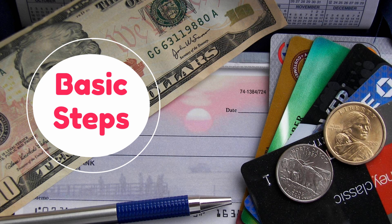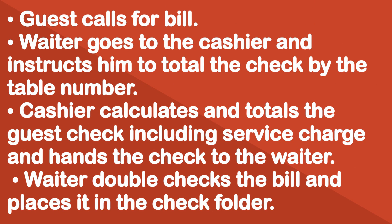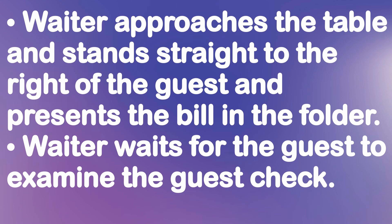Now we will discuss some basic steps which are followed in every restaurant. Guest calls for bill. Waiter goes to the cashier and instructs him to total the check by the table number. Cashier calculates and totals the guest check, including service charge, and hands the check to the waiter. Waiter double-checks the bill and places it in the check folder. Waiter approaches the table, stands to the right of the guest, and presents the bill in the folder. Waiter waits for the guest to examine the guest check.